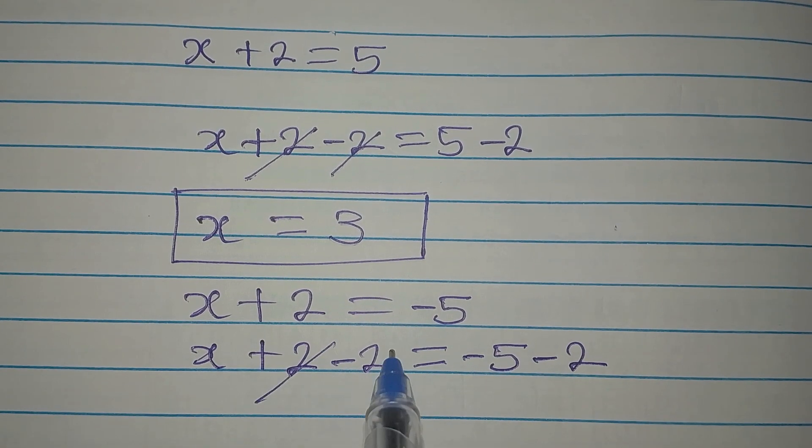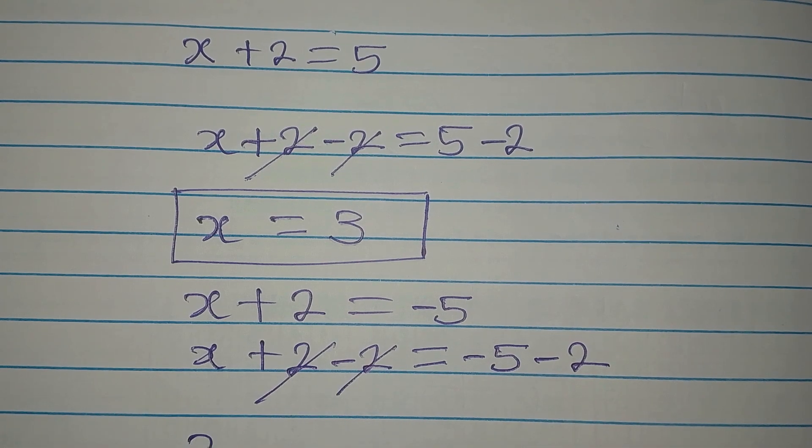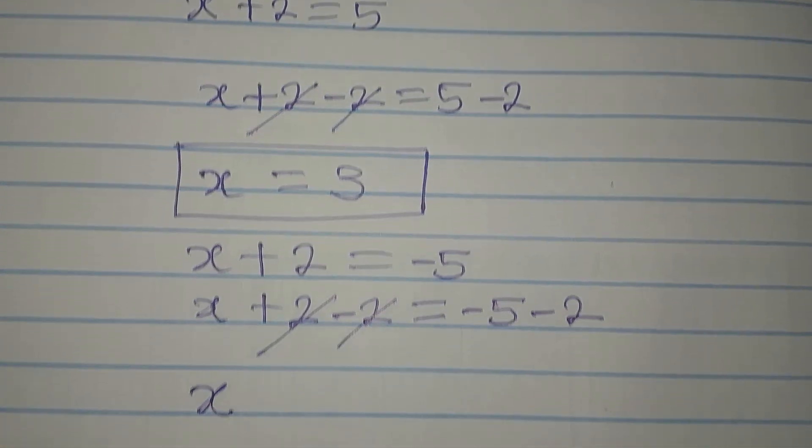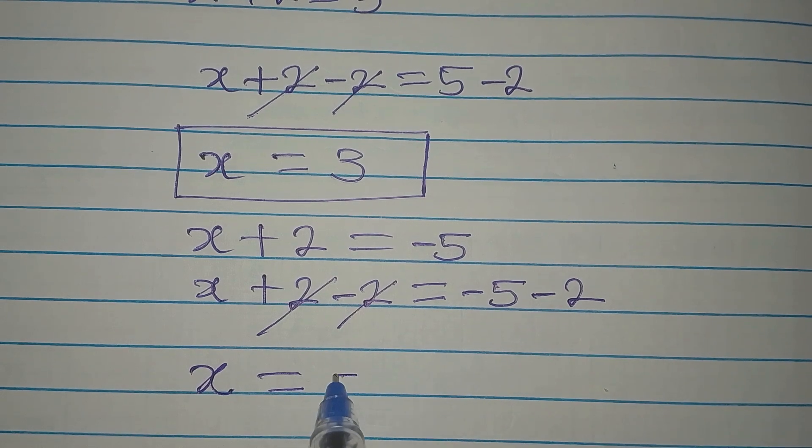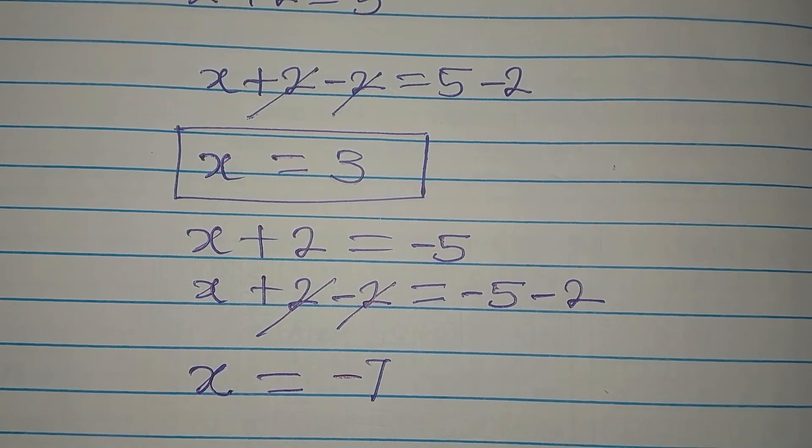So that this can take this away. Now we have x to be equal to negative 5, negative 2 will give negative 7. So this is the value.